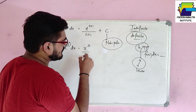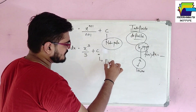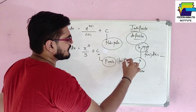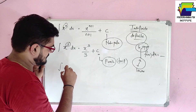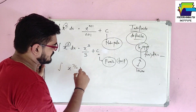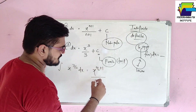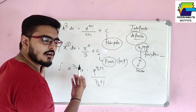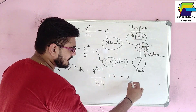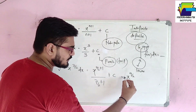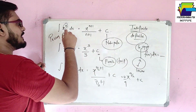For example, the integration of x squared: the power n equals 2, so we get x cubed over 3, plus C. Similarly, for x raised to 7/2, the power increases by one, giving x raised to 9/2 divided by 9/2, plus C. This is called the Power Rule.